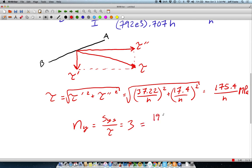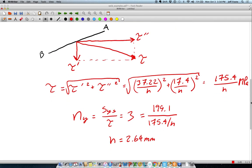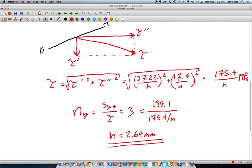The yield strength is 199.1, and our shear stress here is 175.4 over H. Out of that, you can calculate H to be 2.64 millimeters. So, in terms of the math here, that is a complete solution.